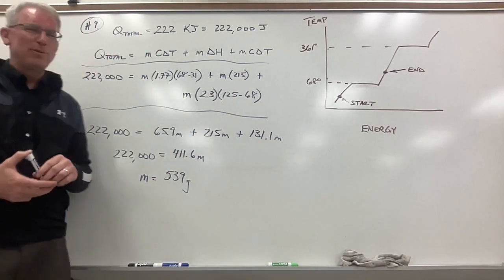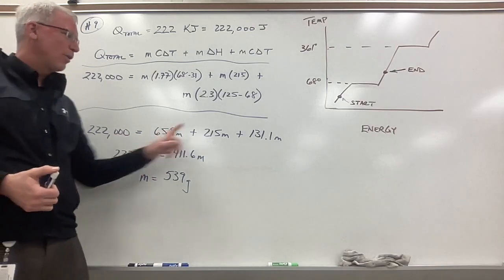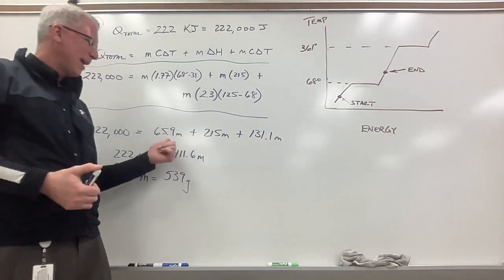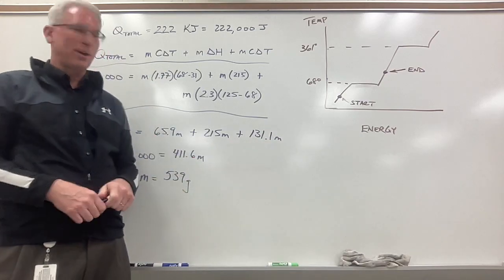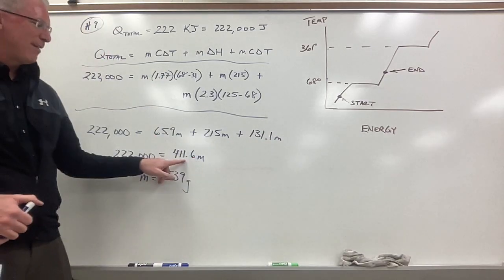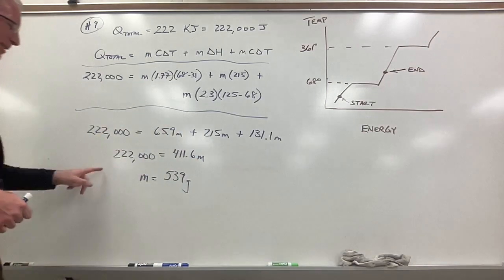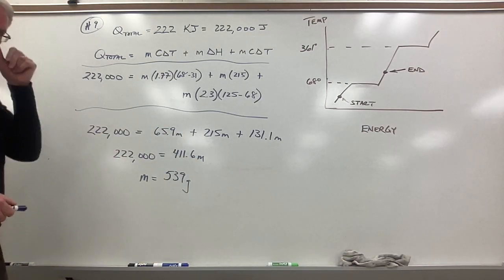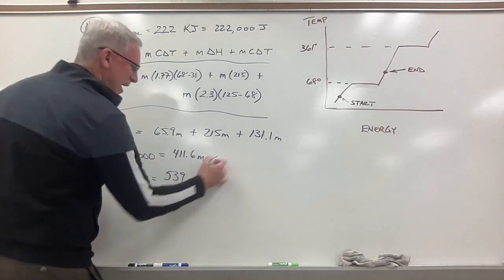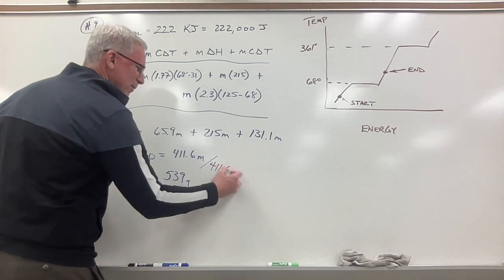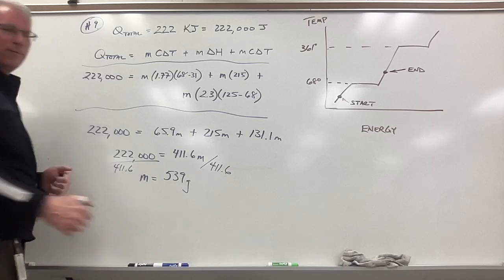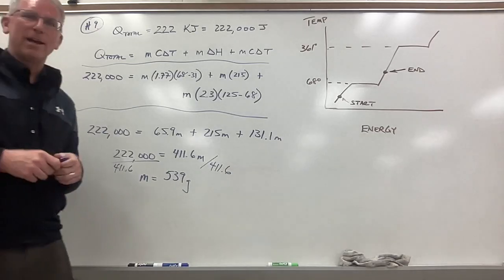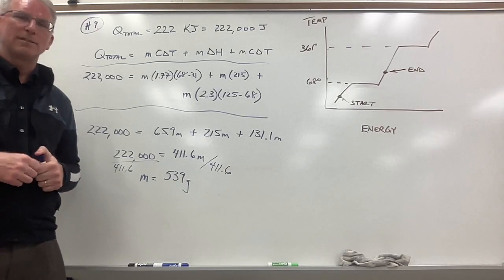Might not look solvable to you yet, but realize these are all like terms: something times M, something times M, something times M. So we could combine our like terms and we get 411.6M is equal to 220,000. And if you divide both sides by 411.6, you will wind up with 539 grams of wax that you could possibly melt.